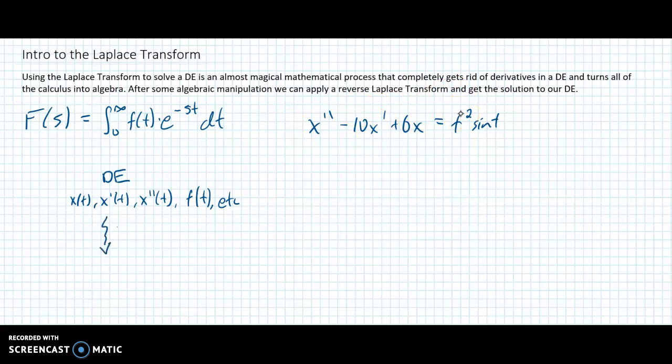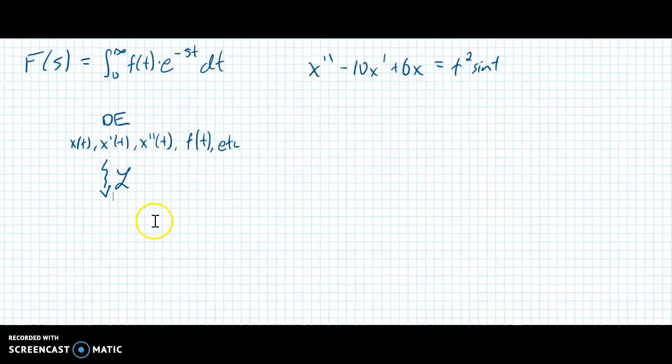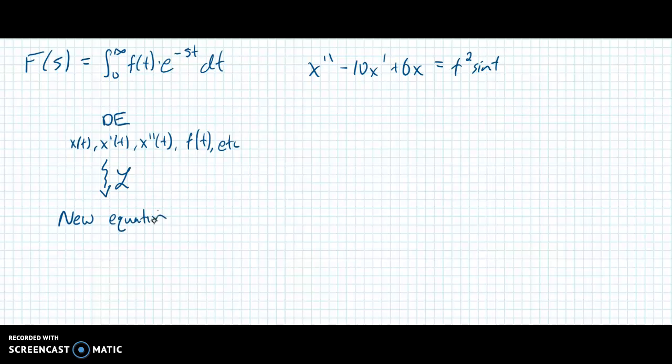What I do is I apply the Laplace transform. That's a squiggly arrow. That's one of the notations that we're going to use. I get a new equation and it has different variables. And we'll get into that. You'll see that. Then I sort of change the way it looks. I use some algebra.